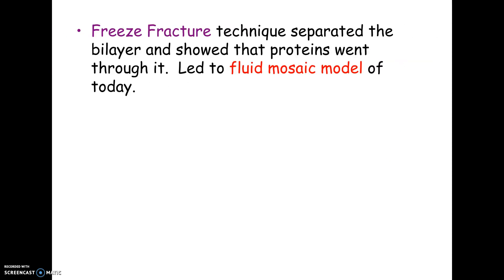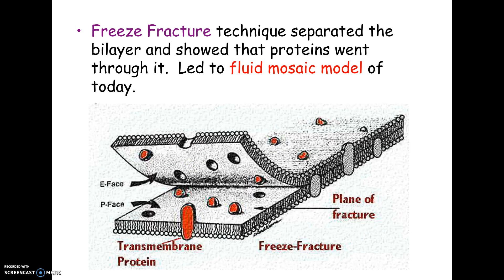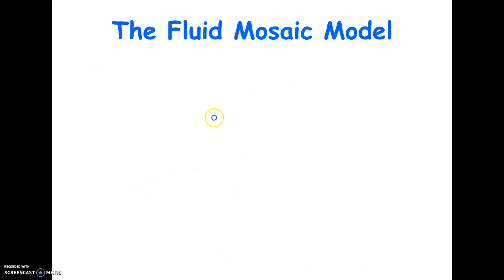What really allowed scientists to understand the fluid mosaic model of the membrane — the model we follow today — was a technique called freeze fracture. They literally froze the membrane and then fractured it. Because it was frozen, they could peel the two layers apart. Freeze fracture revealed that the proteins actually went through the membrane in some cases.